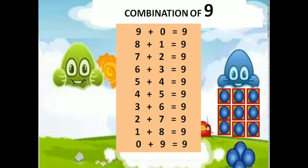Then, green doll having 0 balls, blue doll having 9 balls — 0 plus 9 equals 9. This is the combination of 9. All these numbers, when you add them, you get the answer 9.